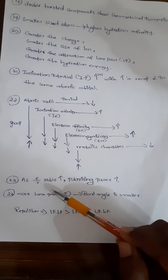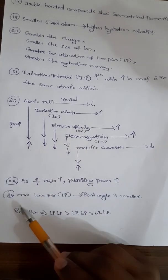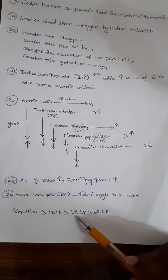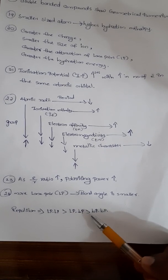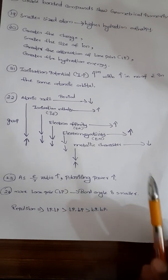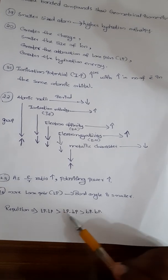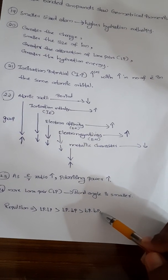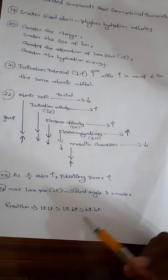The repulsion between lone pair and lone pair will be more compared to lone pair and bond pair. And the repulsion between lone pair and bond pair is greater than compared to bond pair and bond pair. This is the most important topic. So the order of repulsion is: lone pair–lone pair > lone pair–bond pair > bond pair–bond pair. Thank you.